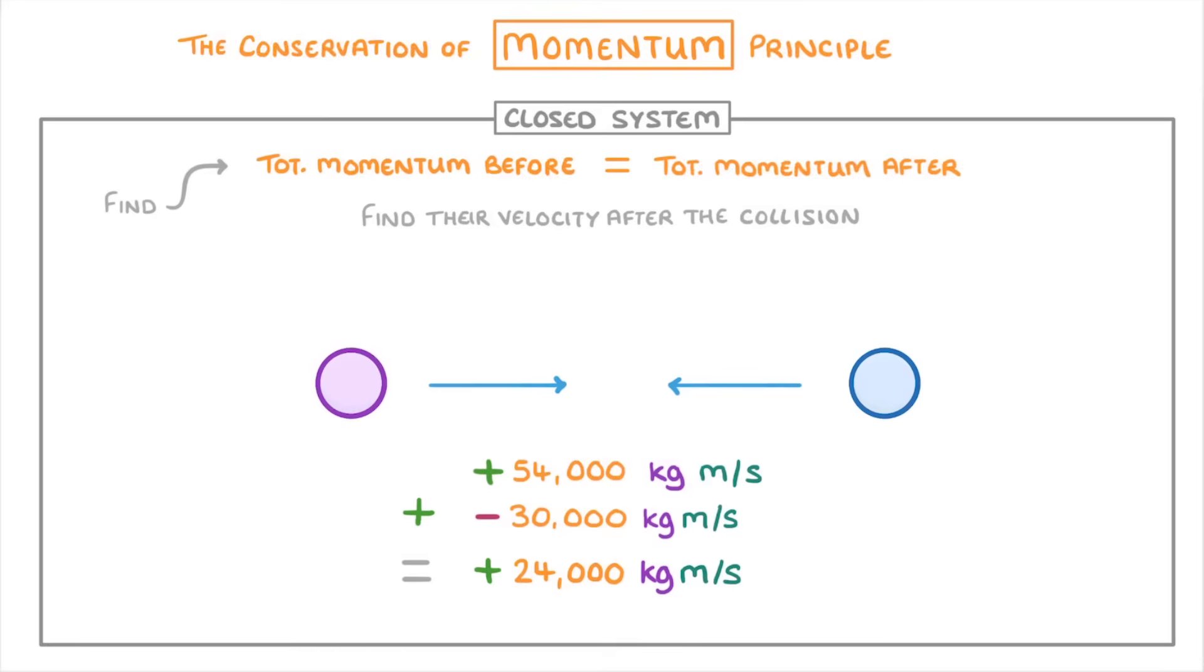Then, because of our conservation of momentum principle, we know that once they've collided, their total momentum must still be positive 24,000. And remember that in this scenario, a positive number means that it's going to the right.